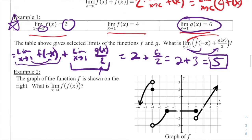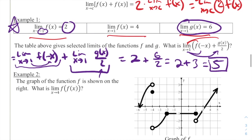One interesting thing about Example 1: we were never given the actual function for f(x) or g(x). We only knew three facts about them, yet we were able to do limit work just by knowing our properties of limits, which is pretty cool.